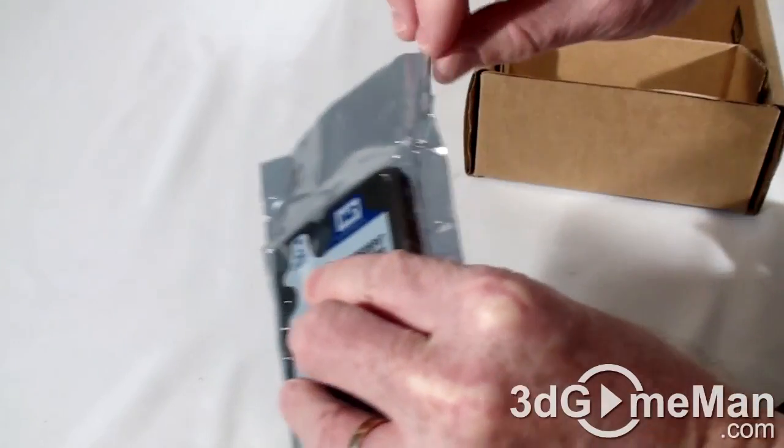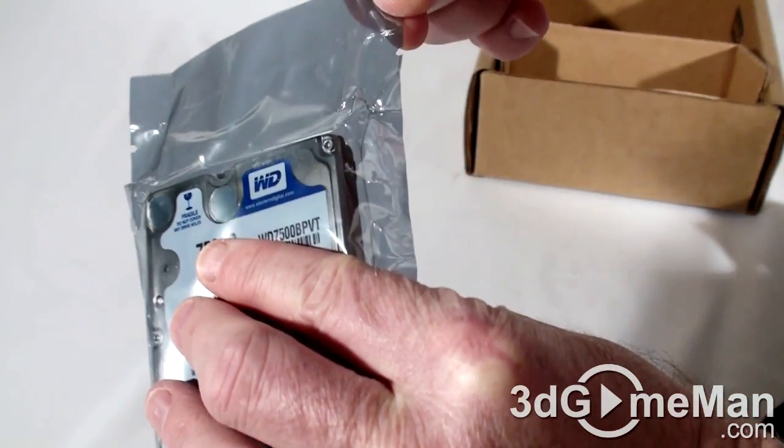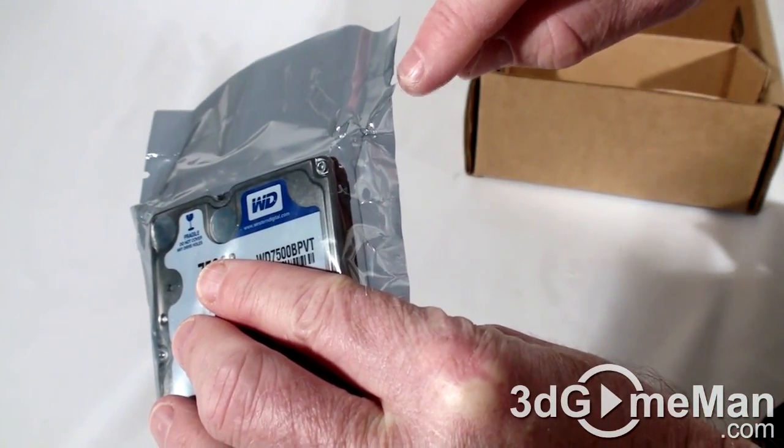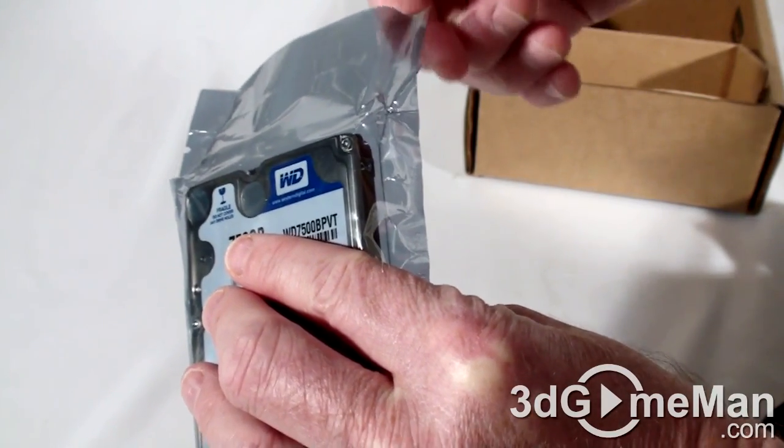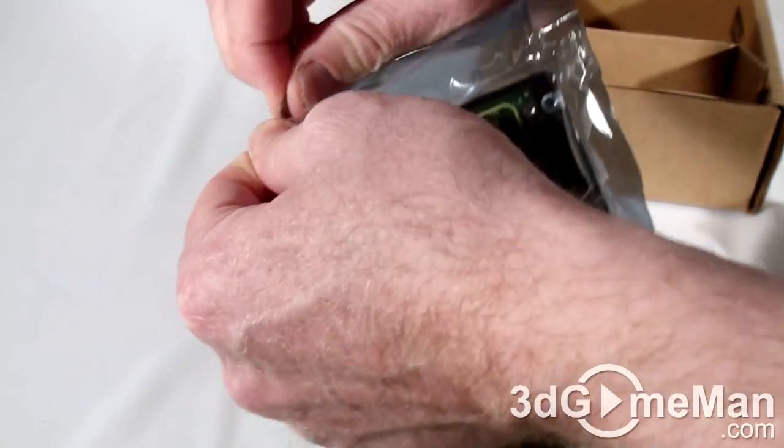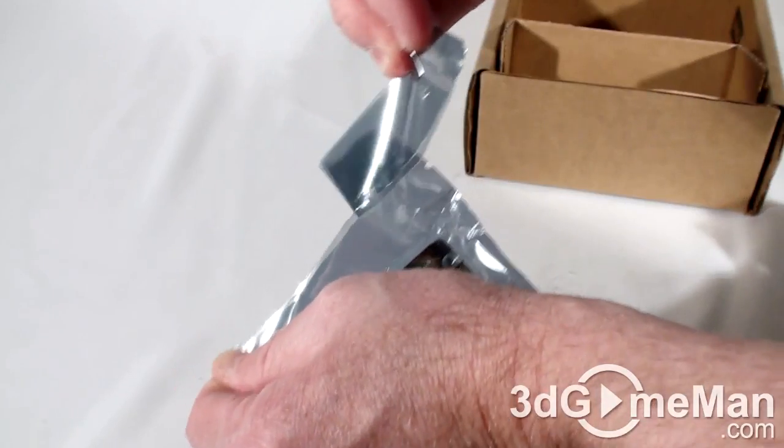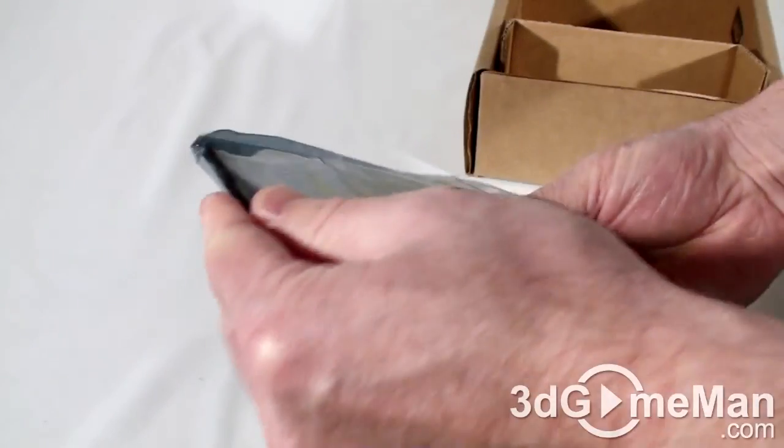And you can tear here at the top. There's usually a little area right here in the anti-static bag to tear it. Okay, so let's rip it open and carefully take it out.